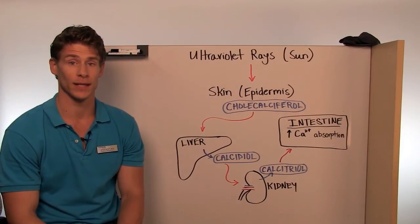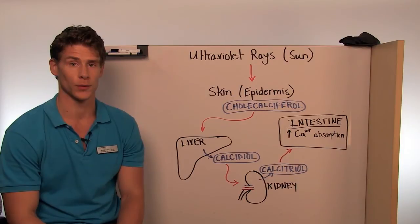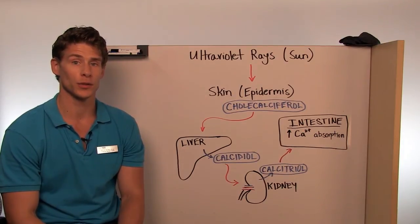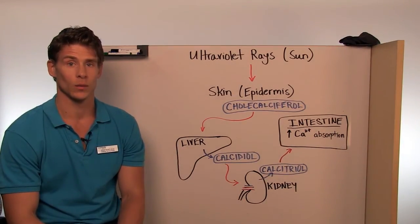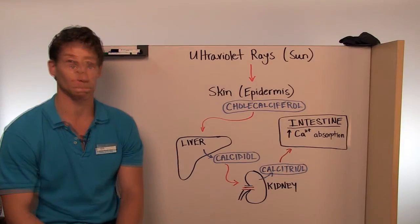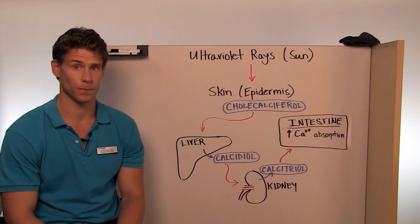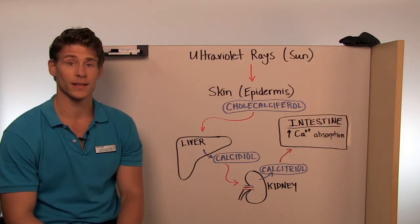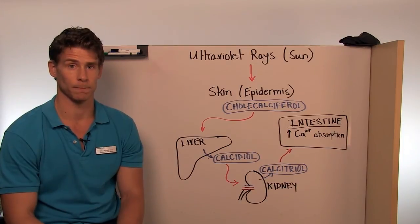Vitamin D3 is essential for the maintenance and the development of strong and healthy bones. It is used to produce a hormone called calcitriol, which helps increase the absorption of calcium and phosphate in the digestive tract. It is the integumentary system — more specifically the epidermis — that creates vitamin D3.